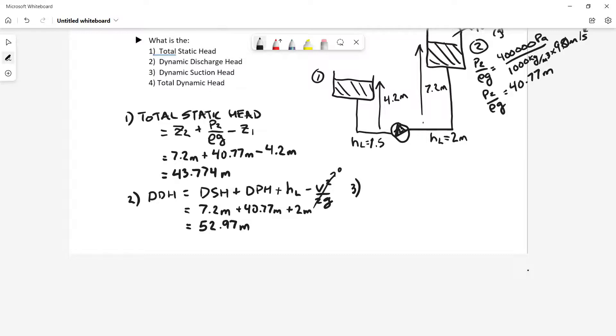My total, or my dynamic suction head, dynamic suction head is going to be equal to my suction static head plus my suction pressure head minus the head loss minus the velocity squared over 2G I'm entering the pump. Okay, my suction velocity head. And once again, that guy is just zero because of my velocities. So my dynamic suction head is going to be 4.2 plus zero. No pressure in that tank. It's open minus 1.5 and I get a value of 2.7 meters.